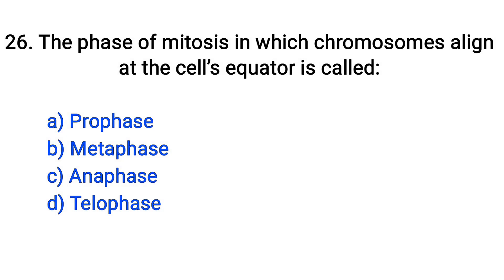Question number 26. The phase of mitosis in which chromosomes align at the cell equator is called: prophase, metaphase, anaphase, telophase. The right answer is option B: Metaphase.